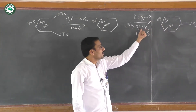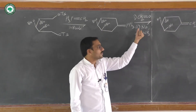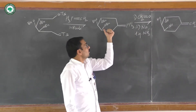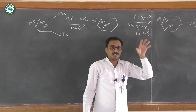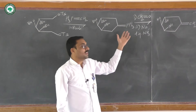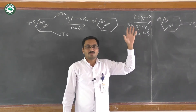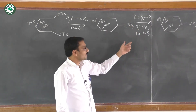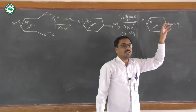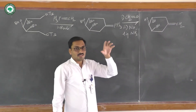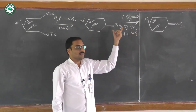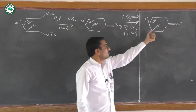Next, we use sodium in the presence of liquid ammonia. The role of sodium in liquid ammonia is to convert the OBn groups into OH groups. Generally, OBn groups undergo hydrogenolysis to OH in the presence of H₂/Pd-C, but here we cannot use H₂/Pd-C because it would also reduce the alkene. Therefore, selectively, sodium in liquid ammonia is used to convert OBn into OH.